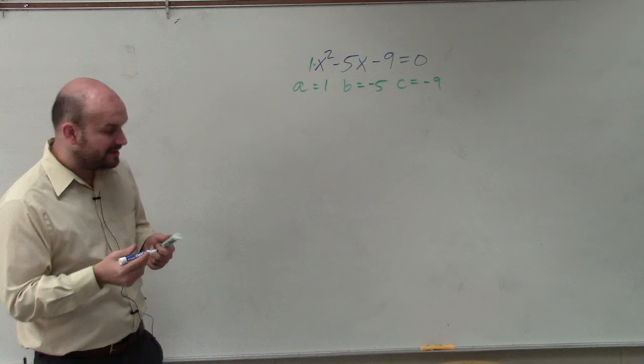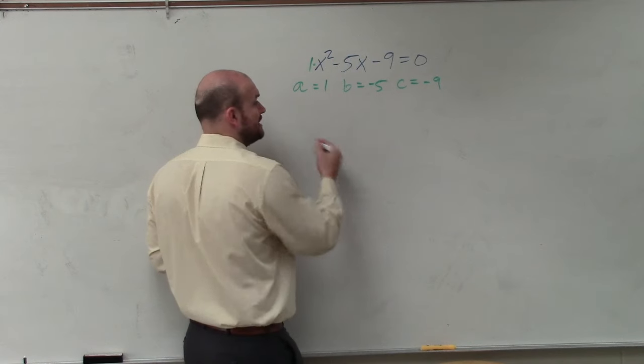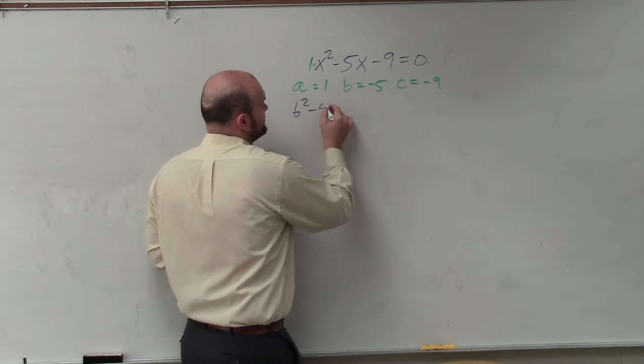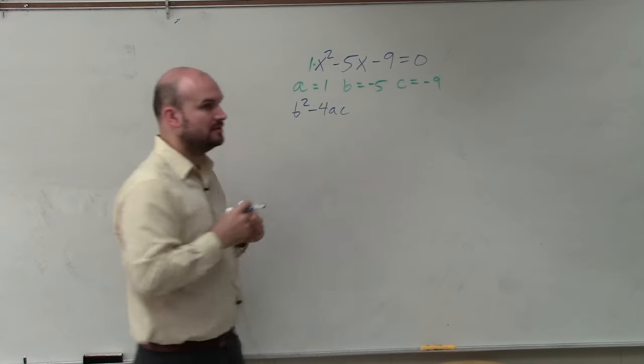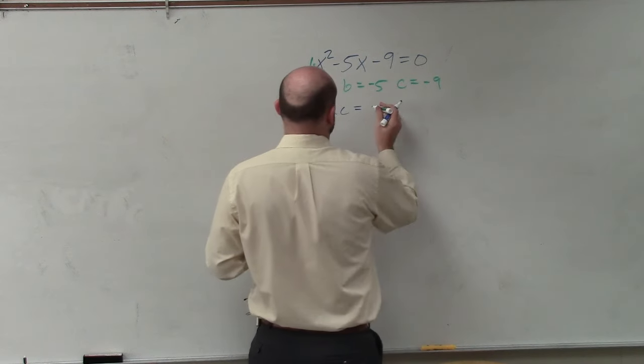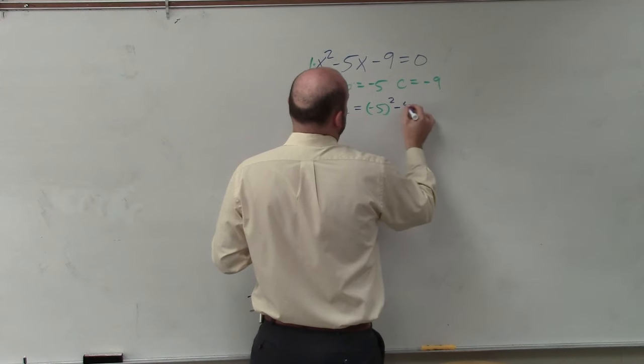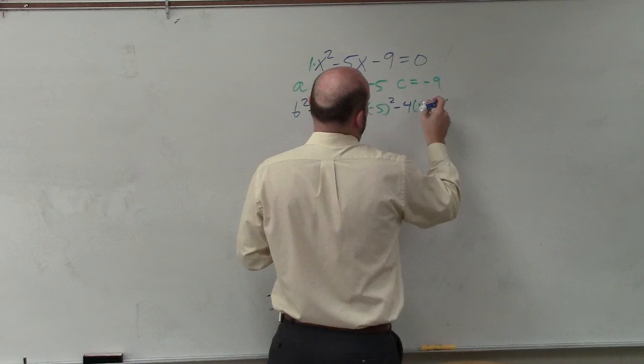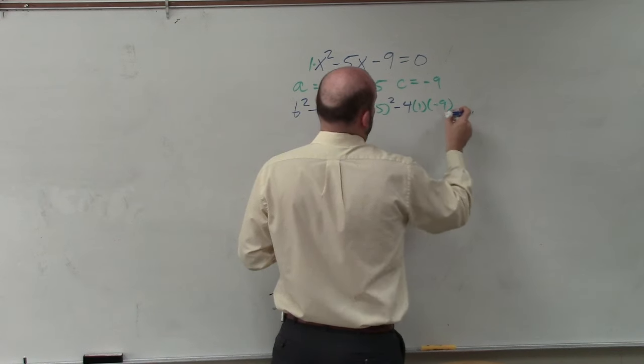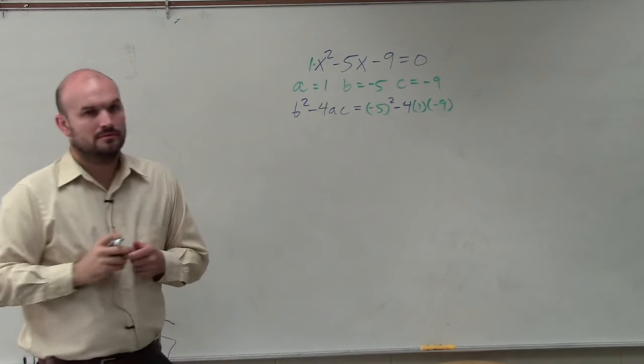So now, the next thing I would say is determine the discriminant. b squared minus 4 times a times c. So we just plug in what b is, which is negative 5 squared minus 4 times a times c, right?